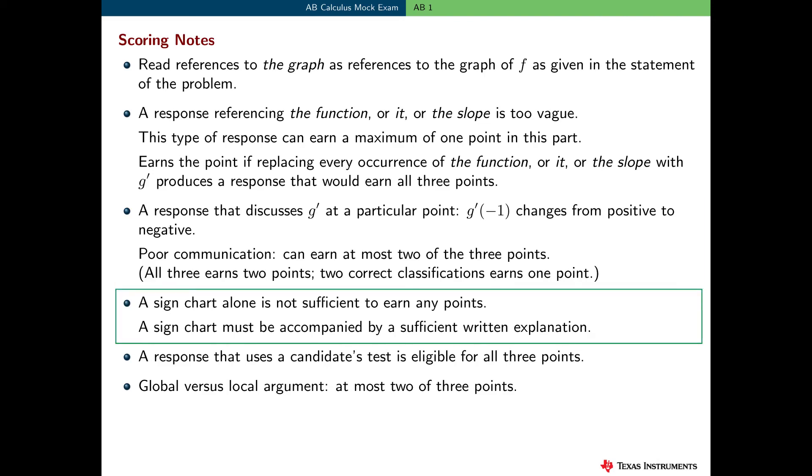Remember that a sign chart alone is not sufficient to earn any points. The student must interpret a sign chart with a written explanation. Now, some students may actually attempt to answer this question by using a candidates test. They're eligible for all three points here, but they must include correct values for g at the three critical numbers.